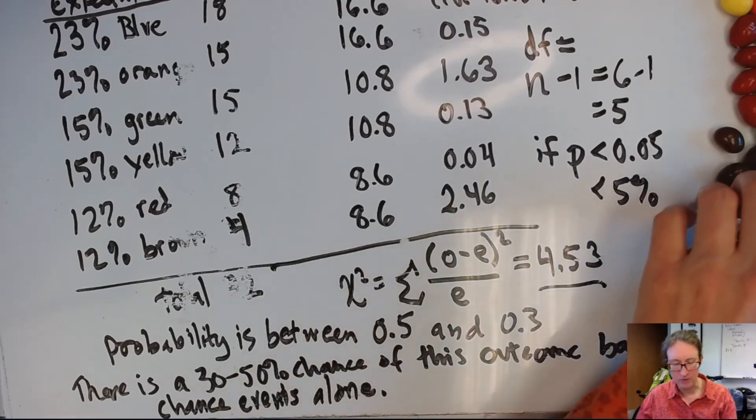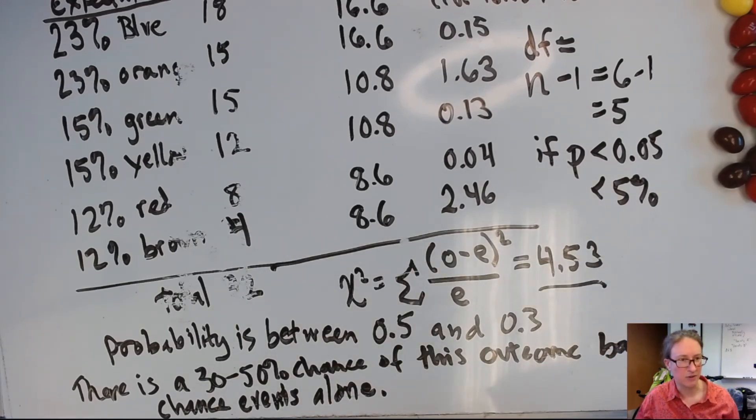Okay. Well, I hope this was helpful for seeing another example of how to calculate the chi-squared statistic and how to interpret the resulting value that you get. And hopefully this will help you remember this and apply this to future questions as well.